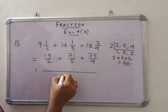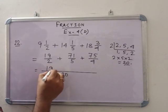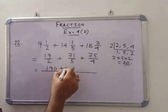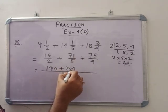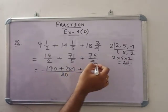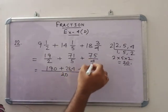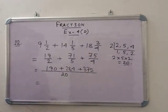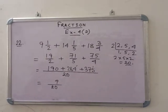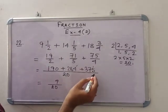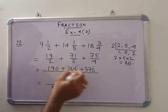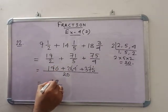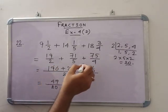So write 20 here. That means this is 190. 71 into 4, this is 284. Next plus, this is 5, so 75 into 5, that means 375. Now add these 3. So see that, 5 plus 4 is 9. 7 plus 8 is 15, 15 plus 9 is 24, then 2 in hand. So 2 plus 3 is 5.